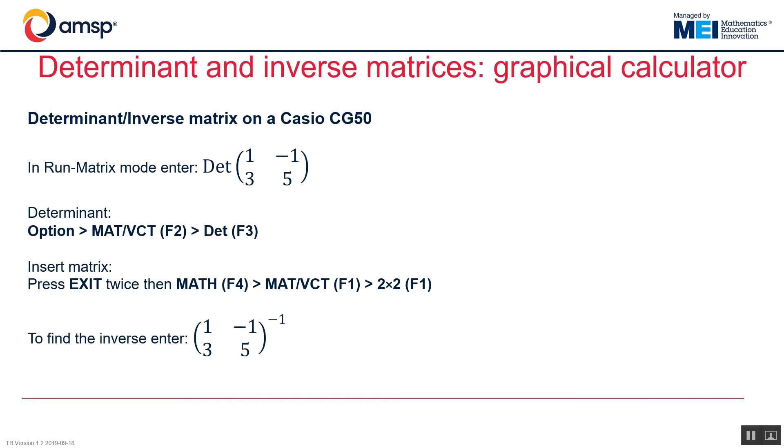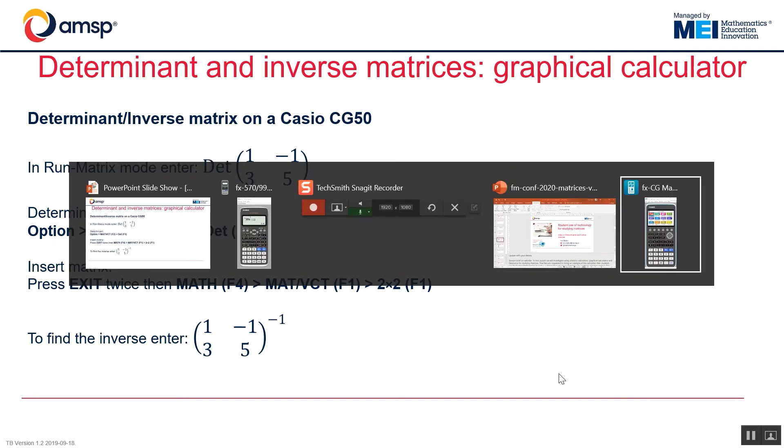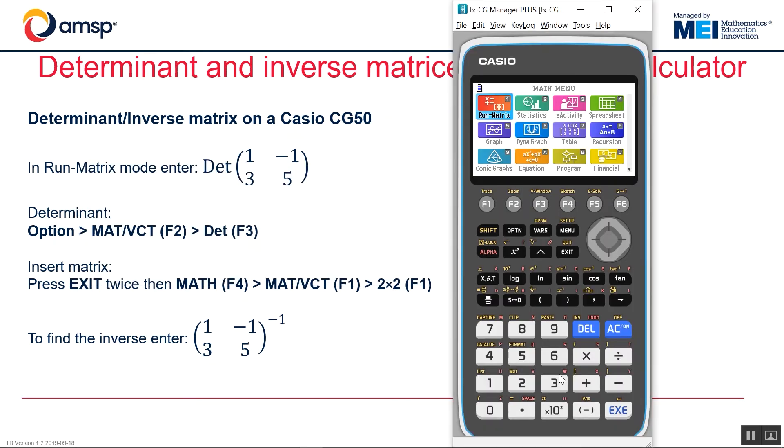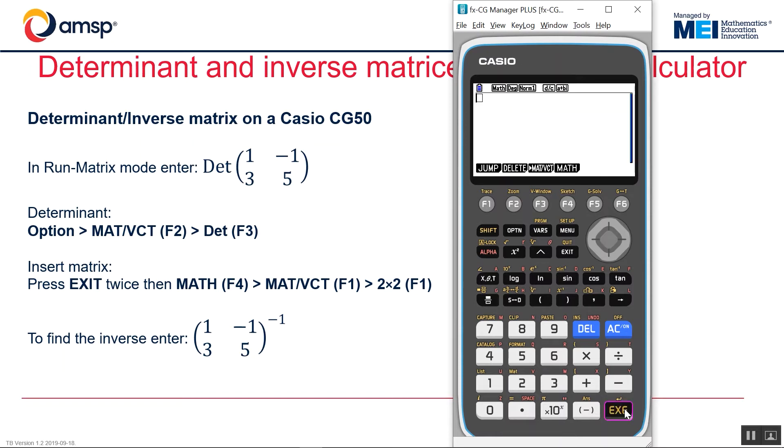Looking at the determinant and inverse on a graphical calculator, I'll use a Casio CG50 as an example. So I can go into matrix mode. I'm then going to calculate the determinant just in one line of calculation.